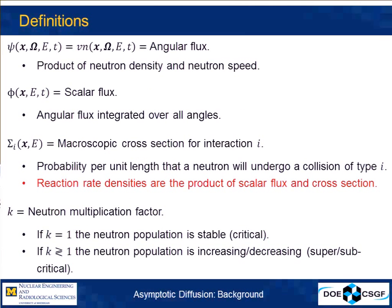I'll introduce some terminology that comes up in reactor analysis. The first thing is neutron flux — it's very closely related to the density of neutrons at any point in phase space, but it's actually the total distance traversed by neutrons per unit volume per time. It can be angle dependent, or you can integrate over angle to get the scalar flux. And then we have the macroscopic cross section, which is the probability per unit length that a neutron will undergo an interaction. Multiplying that by the total length traversed gives us all the reaction rates happening inside the core. So calculating the scalar flux is very important because it tells us every reaction going on in the reactor.